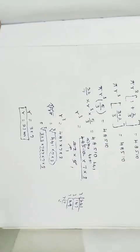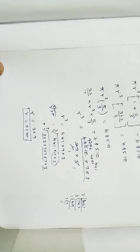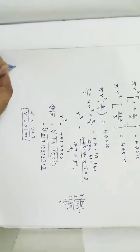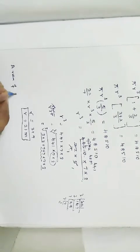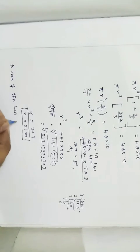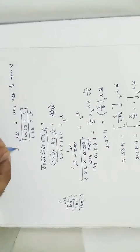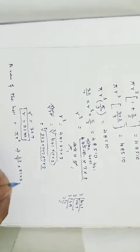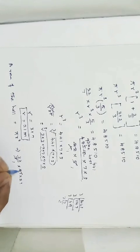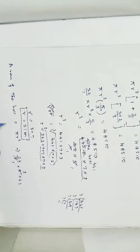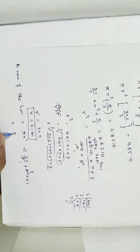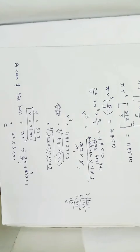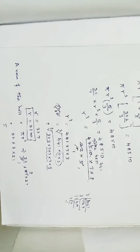Now finding the area of the floor: area = πr² = (22/7) × 21 × 21. Simplifying: 21/7 = 3, so area = 22 × 3 × 21 = 22 × 63 = 1386 square meters.